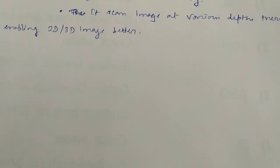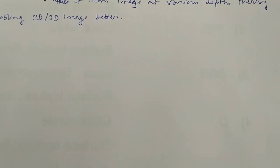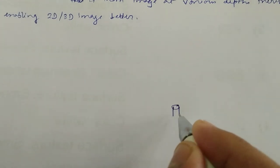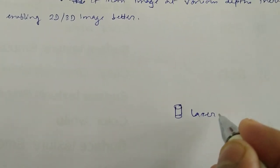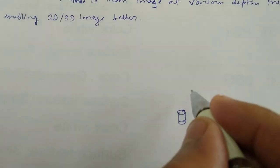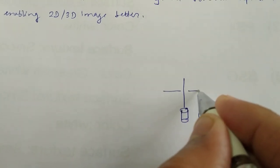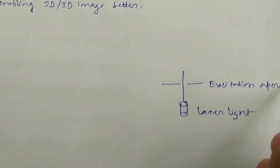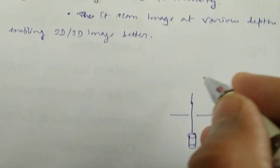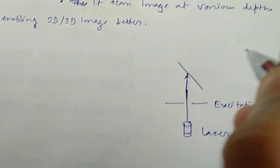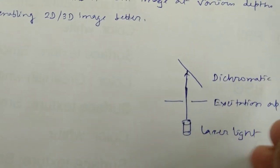Let us understand the basic working mechanism of confocal microscopy. A laser light source is used. The laser light passes through an excitation pinhole and then to a dichromatic mirror.